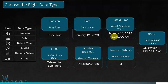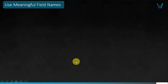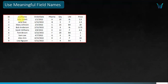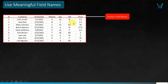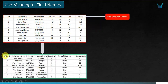The next best practice is to use meaningful field names. Looking at this table, you have unclear column headers in the uncleaned version. In the clean version, headers like 'Order ID' and 'Customer Name' make more sense and are more intuitive compared to unclear field names. Meaningful field names help anyone look at the data and make sense of it right away.